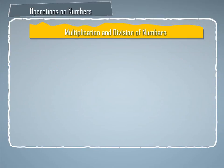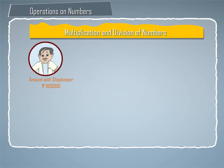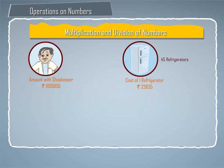Now let us take examples on multiplication and division. A shopkeeper had rupees eleven lakh with him. He placed an order for forty five refrigerators at rupees twenty two thousand eight hundred thirty five each. How much money will be left with him after the purchase? Write the solution sentence also. We are given that: